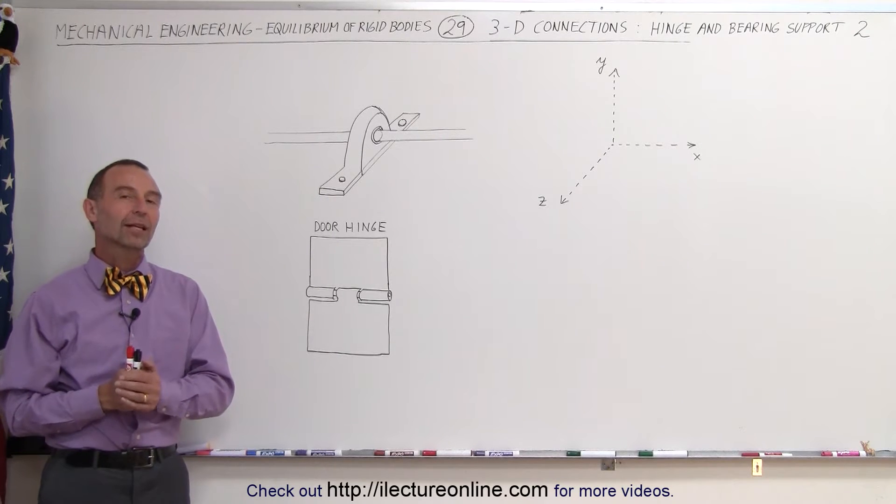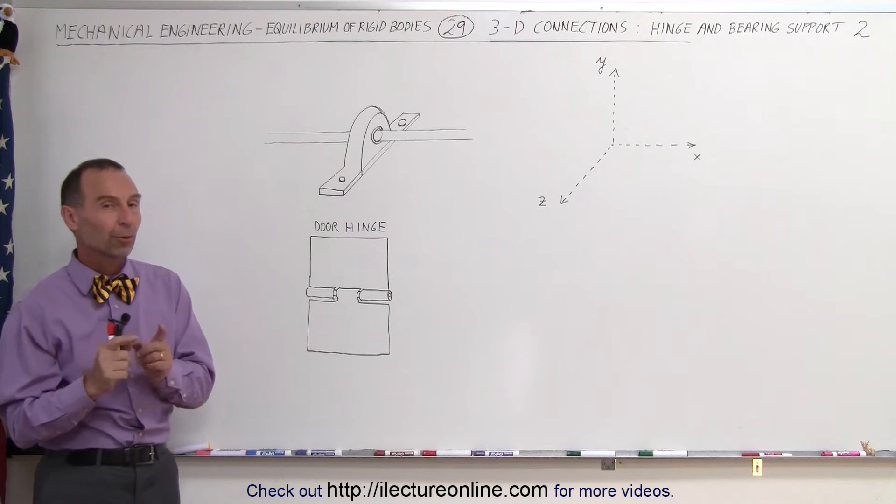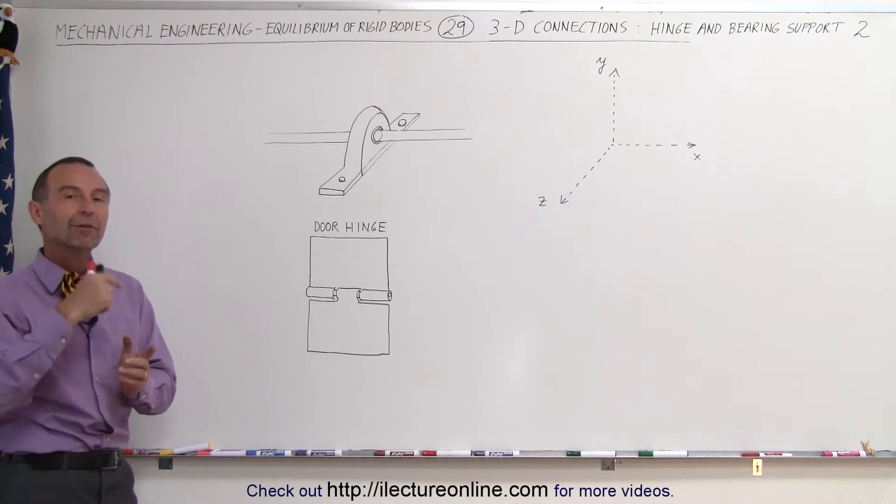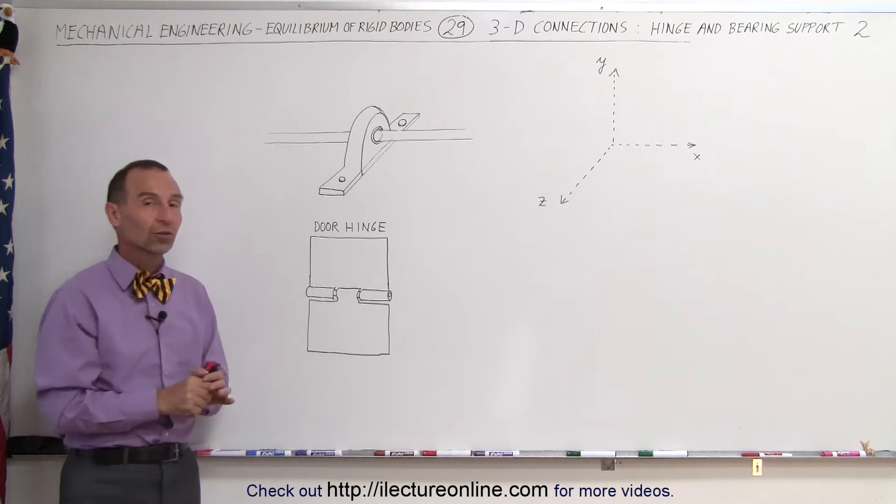Welcome to Electronline and here's the last type of our 3D connections. It's called the hinge and bearing support but it's slightly different from the one we had before and another example of this is what we call the door hinge.